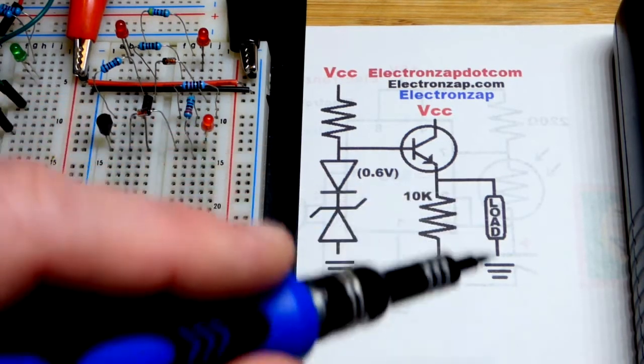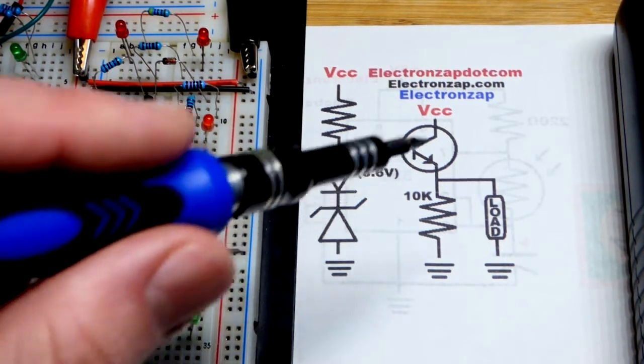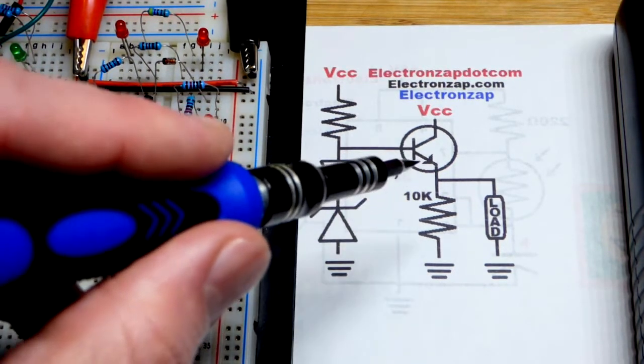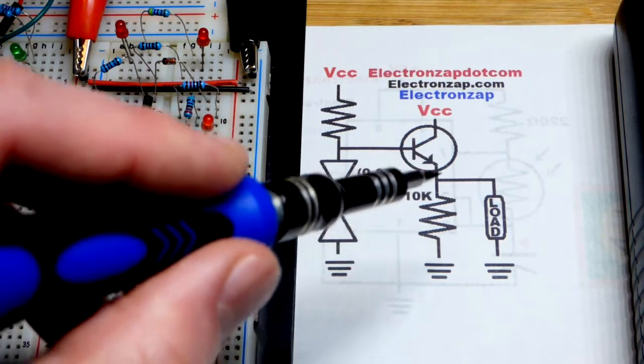Problem was, when the load demanded too much, it didn't always hold that voltage very good. So we can improve that with the NPN bipolar junction transistor emitter follower, which we have right here.